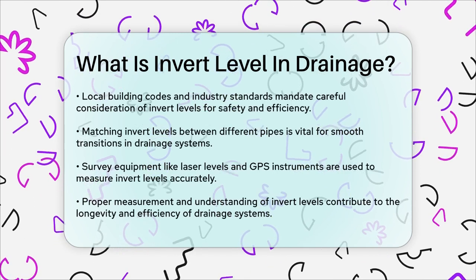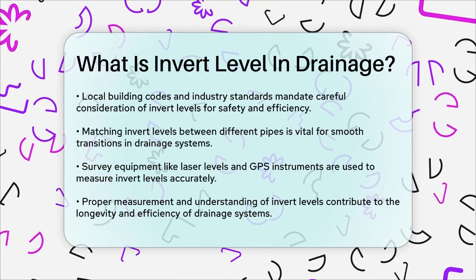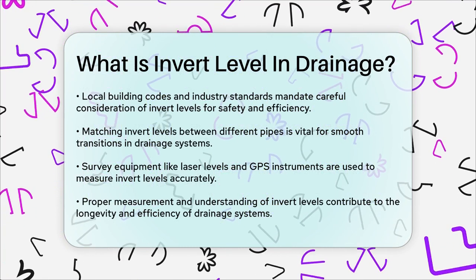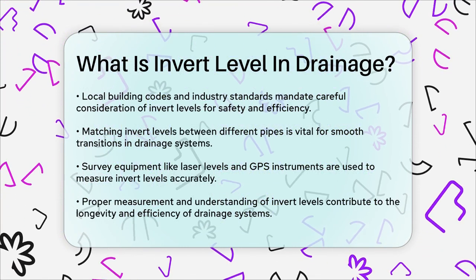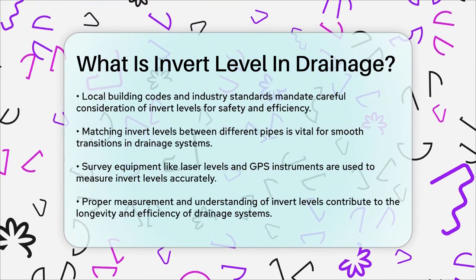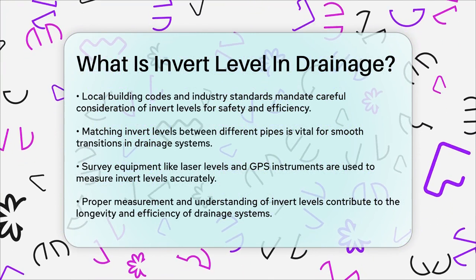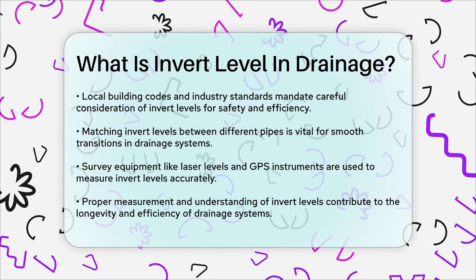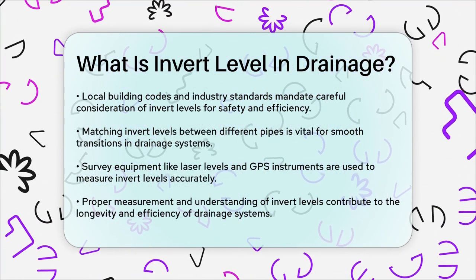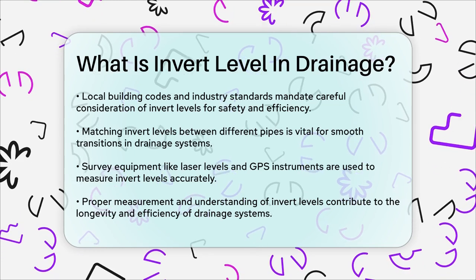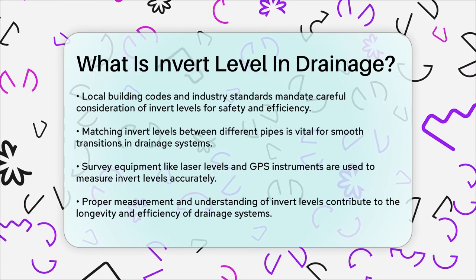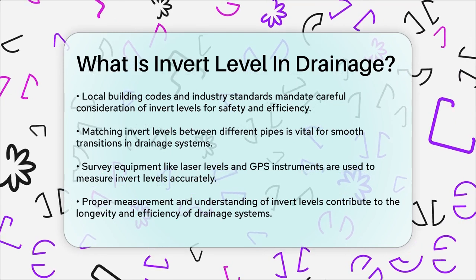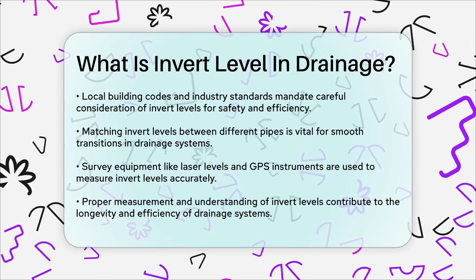In practical terms, invert levels are measured using survey equipment like laser levels, total stations, or GPS-based instruments. This involves establishing a benchmark elevation above ground, measuring the depth from the benchmark to the bottom inside surface of the pipe, and recording the data for accurate installation and future reference.